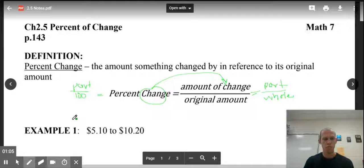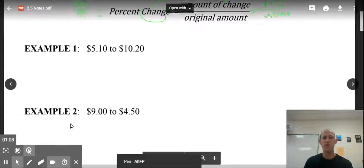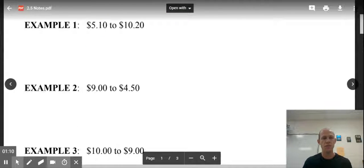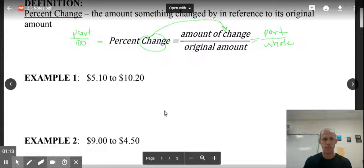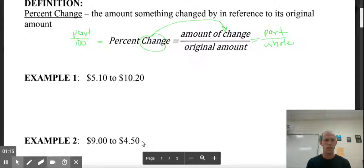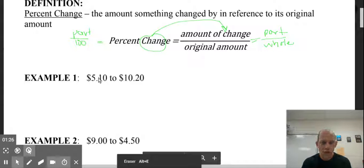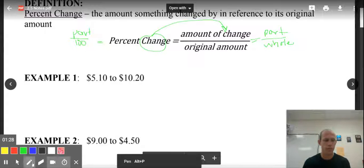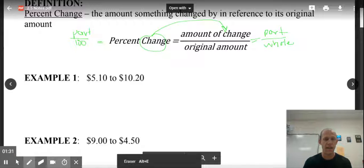So if we look at example number one, we have $5.10 and it becomes $10.20. Let's keep this formula on the screen. Remember, percents are always the part out of the whole. But if we're looking for the percent change, we're looking for the change out of the whole. So what we want to do is find how much did these change? Well, they changed by $5.10. If you subtract $5.10 from $10.20, you will get $5.10.